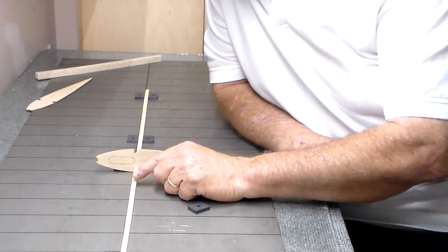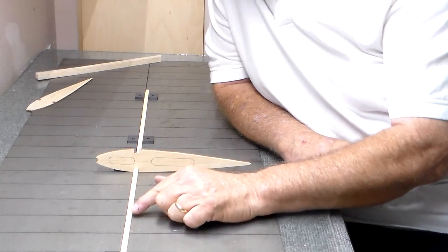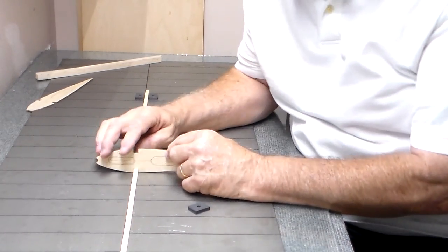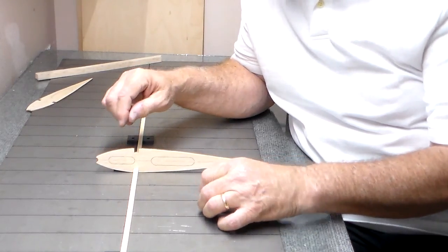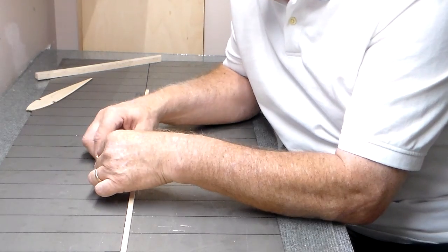I mark my spar too. I forgot to mention that you take a magic marker or a pencil and you want to put your spar on the plan and mark the locations of your ribs. That way you can drop this right down on your little line that you've marked on there where this particular rib happens to go.